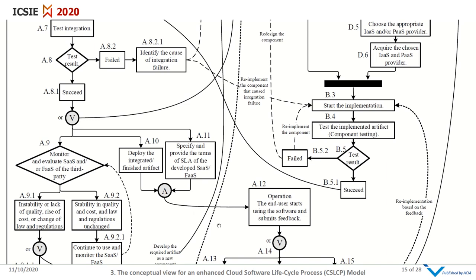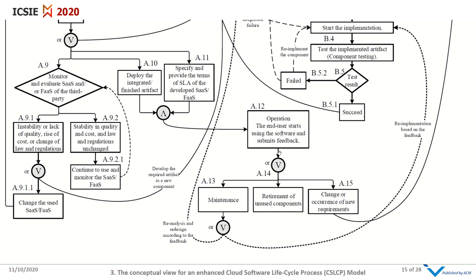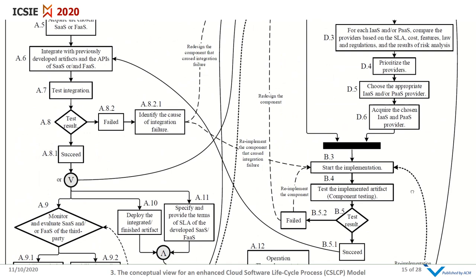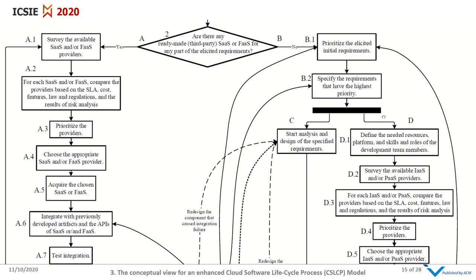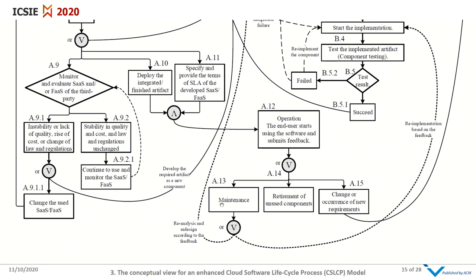In the operation process, the end user starts using the software and submits feedback. The feedback leads to three paths: maintenance, retirement of unused components, or a change or occurrence of new requirements. In case of changing or new requirements, add them back to the priority list in Path P. In case of maintenance, it could lead to re-analysis and redesign of a component based on feedback, or re-implementing the component.